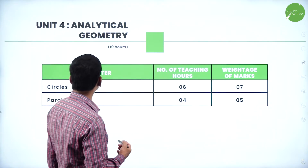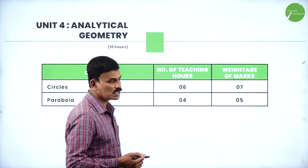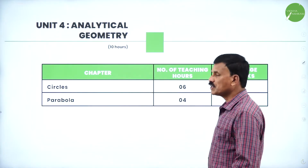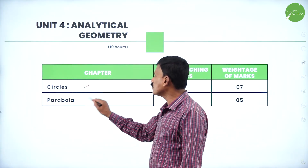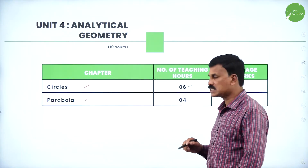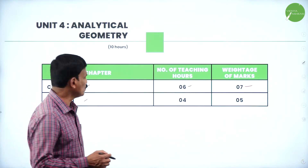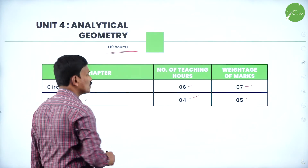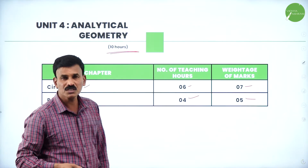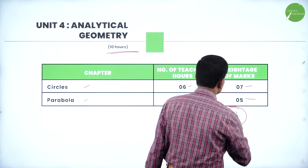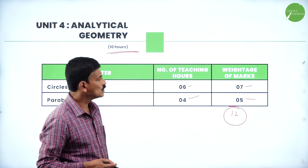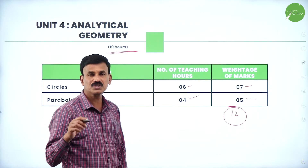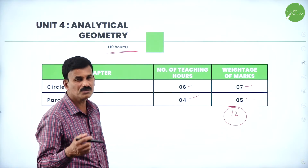Now let us come to Unit 4, Analytical Geometry — an extension of what you studied in 1st PUC. Here we are going to study only 2 curves: Circles and the Parabola. For Circles, 6 teaching hours and 7 marks. For Parabola, 4 hours and 5 marks. Totally 10 hours are required to complete Analytical Geometry and the maximum marks from this unit is 12 marks — 7 from Circles and 5 from Parabola — both coming under conic sections.